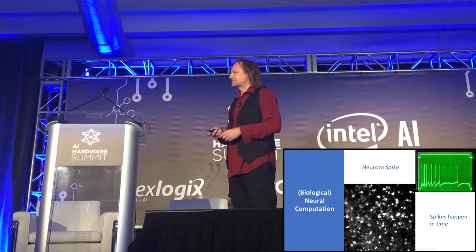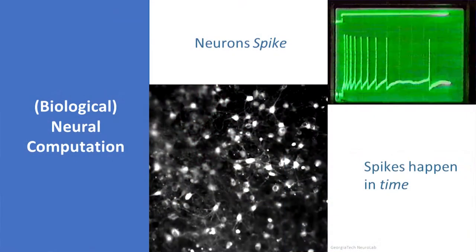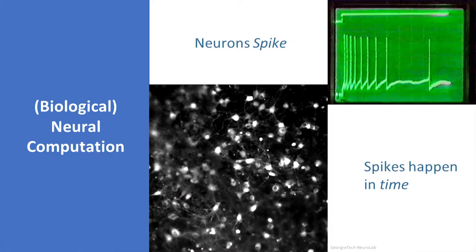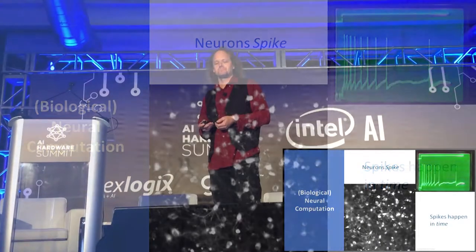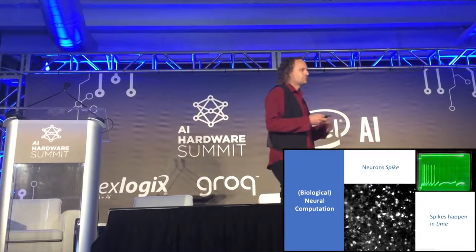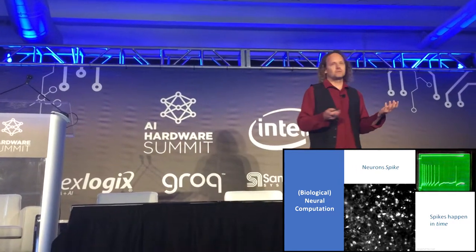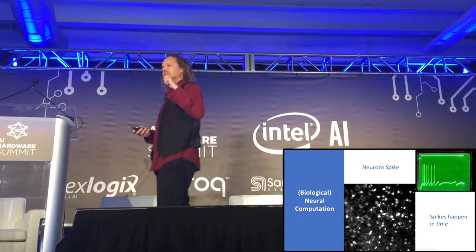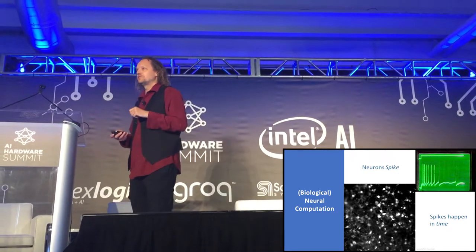No matter where you look in the brain, you see this kind of activity. A sheet of neurons are all spiking, communicating together with spikes, doing information processing, generating intelligence. So I've told you a little bit about biological computation, but why do we care? We're engineers. So let's put our engineering hats on and take a little bit deeper dive into spiking.